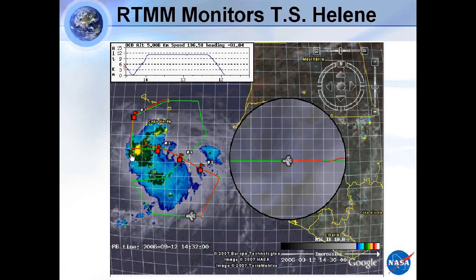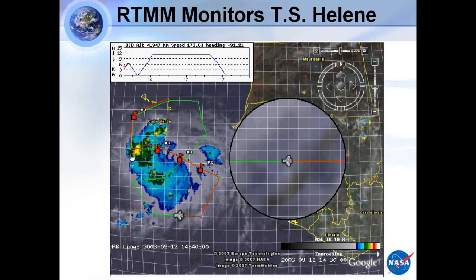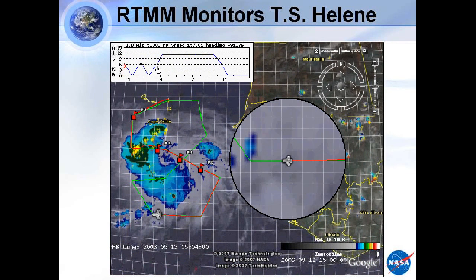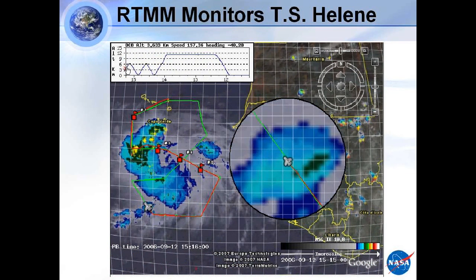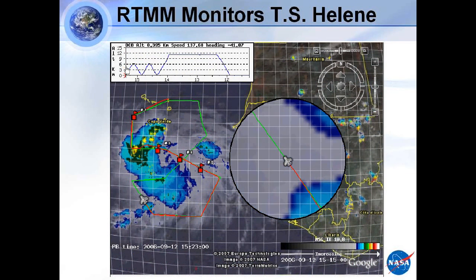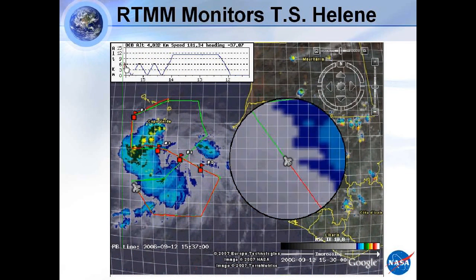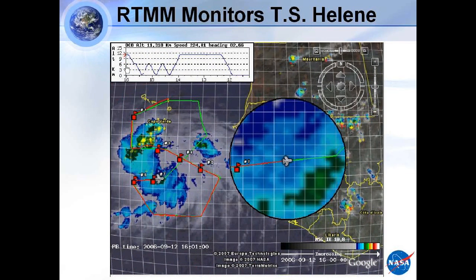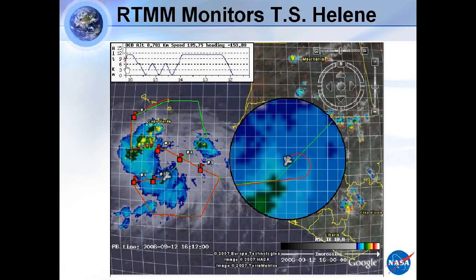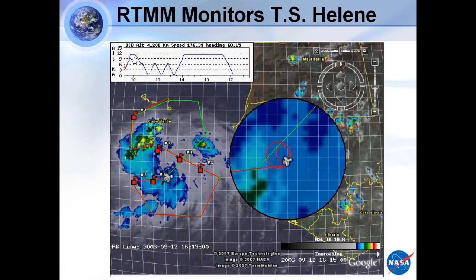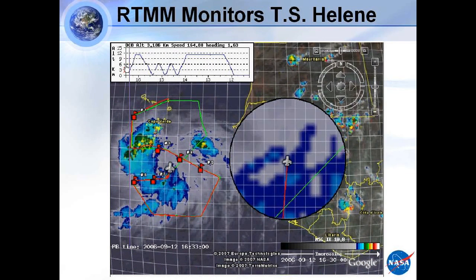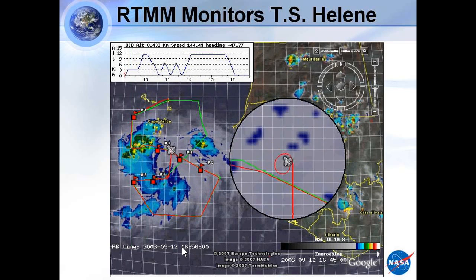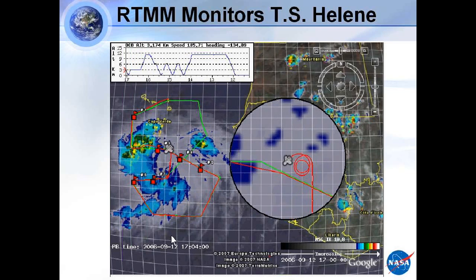Along the bottom you can see time advancing. The plane is flying different altitude tracks. Ed mentioned how the plane was struck by lightning — you're not going to see the actual lightning flash that struck the plane here, but it was right about here. I'm going to end the movie and move on to the next.